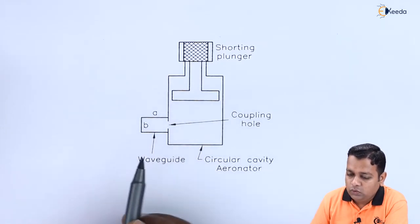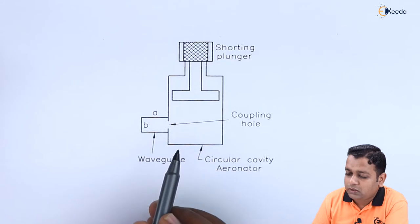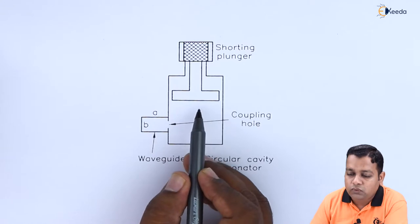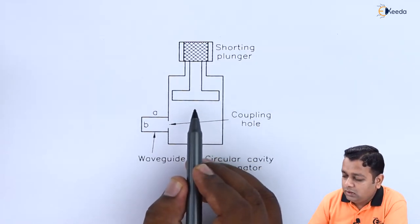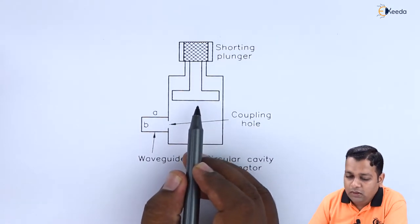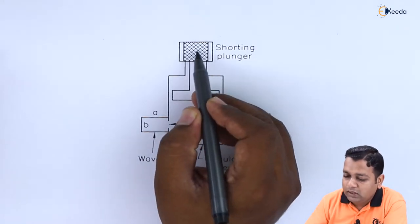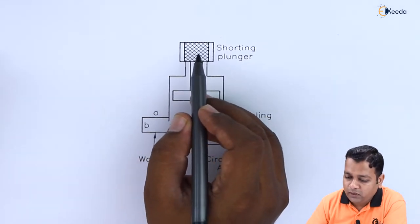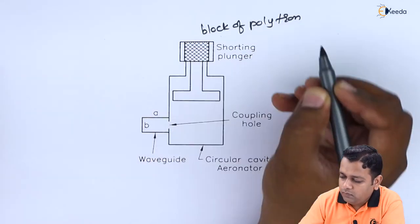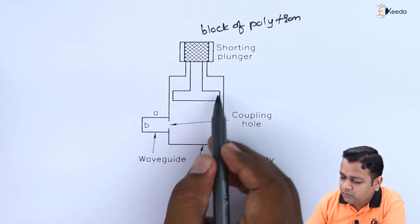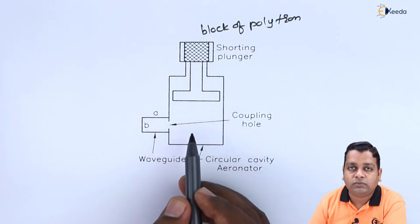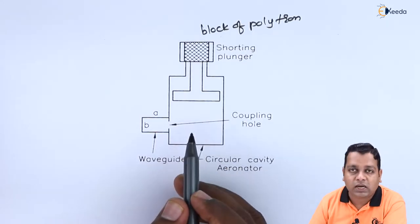So most possibly whatever the resonance, the oscillation we come to see here, due to the oscillation whatever the reflections or the unwanted things we can say, those can be avoided by placing this shaded material which is an absorbing material. So this is basically the block of polytron. So this is the assembly for the shorting plunger with the help of which the inside dimensions of the cylindrical cavity resonator can be changed and it can be tuned to the variable frequency values at the resonance condition.